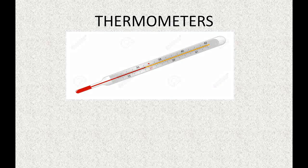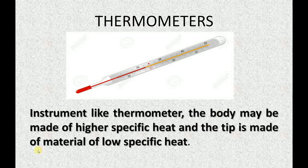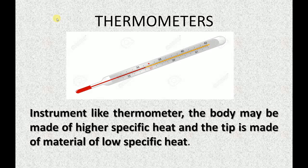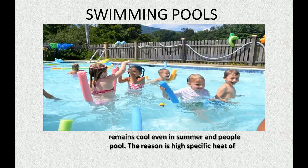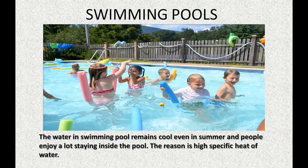A thermometer is an instrument made up of materials with different specific heat. The body of the thermometer is made of high specific heat material, while the tip is made of material with low specific heat — allowing the tip to respond quickly to temperature changes. The swimming pool: water in a swimming pool remains cool even in summer, and people enjoy staying inside the pool. The reason is the high specific heat of water.